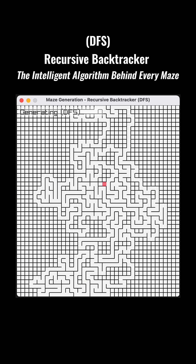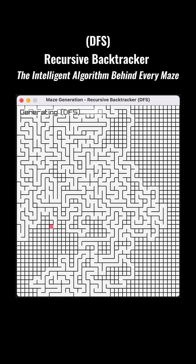The process begins with a grid of cells, where all walls between cells are initially intact. The algorithm selects a random cell as the starting point, marks this cell as visited, and pushes it onto a stack. This stack serves to store the current path being explored and facilitate backtracking.